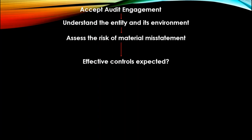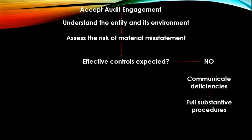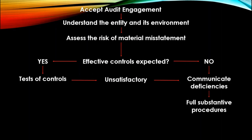If effective controls are not expected, we communicate the deficiency and go for full substantive procedures. But if the expected controls are in place, we do the test of controls. If the test of controls is unsatisfactory, communicate the deficiency and perform substantive procedures. If the test of controls is satisfactory, reduce the substantive procedures.